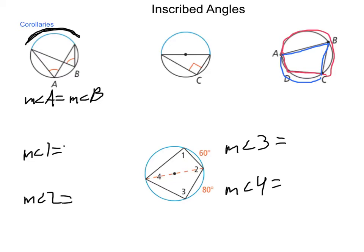Using the second corollary, that if it intercepts a semicircle, we have 180 degrees, well, angle 1 and angle 3 both intercept those semicircles. So the measure of angle 1 would have to be 90 degrees, and the measure of angle 3 would also be 90 degrees.